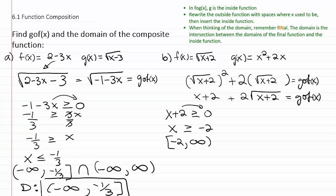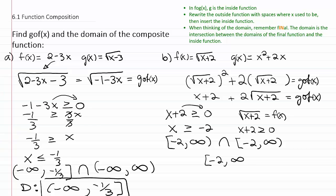We also have to consider the inside function. The inside function was f, which is the square root of x plus two. That function actually has the exact same domain, because x plus two must also be greater than or equal to zero, giving the same answer as the final function. If we take the intersection of the two, we end up with negative two to infinity. They're completely overlapping, so the answer is negative two to infinity for this question.